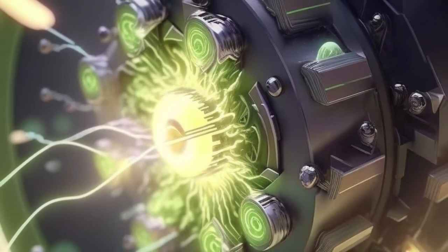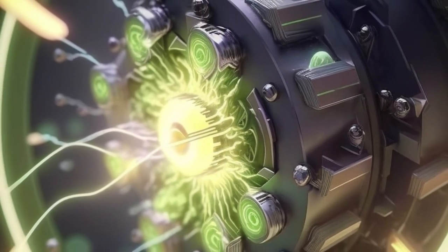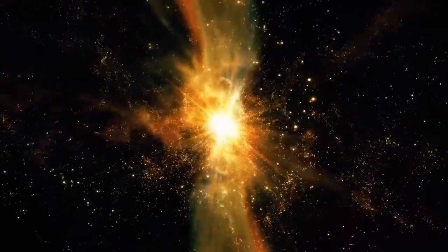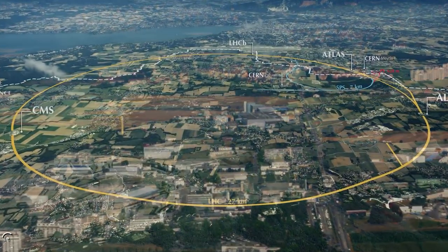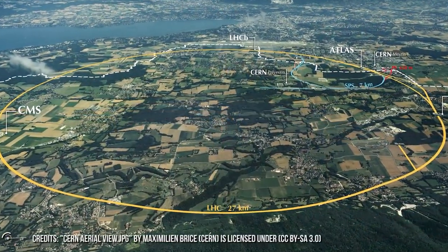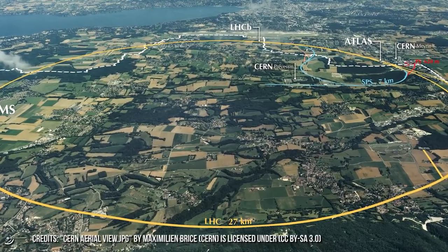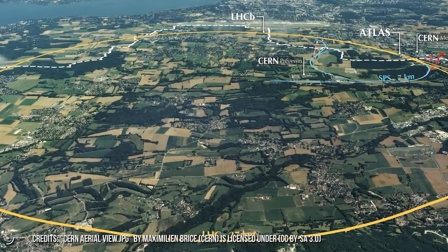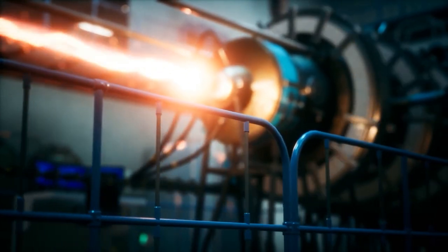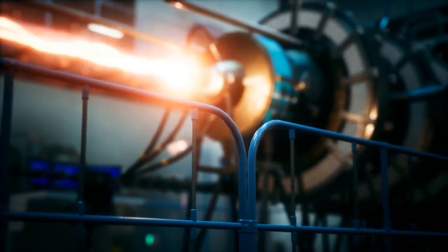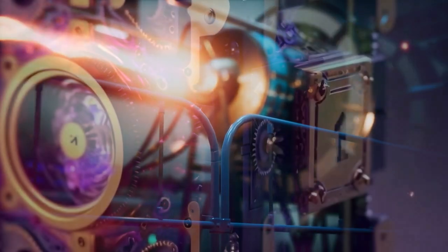By placing the particle accelerator underground, it is shielded from cosmic rays and any other sources of background radiation that could interfere with the beam or measurements. And lastly, space requirements. Particle accelerators can be very large. Building them underground provides the necessary space while freeing up valuable surface area. Overall, building particle accelerators underground provides a controlled and stable environment that is ideal for conducting experiments with high energy particles.